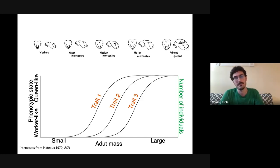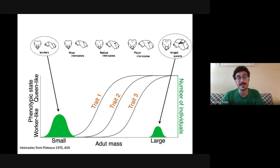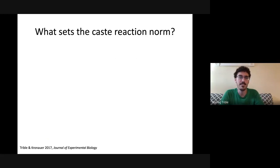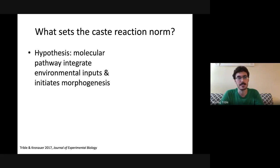This data implies that caste development in ants is essentially a one-dimensional system — a single dimension of variation from worker-like to queen-like traits. Any individual can be placed at some position along that dimension, tightly correlated with body mass or size. This simplifies how we think about caste development. For why most species simply possess workers and queens, we can imagine overlaying a bimodal size distribution on this reaction norm — one mode of small individuals all with worker-like traits and a distinct mode of large individuals all with queen-like traits.